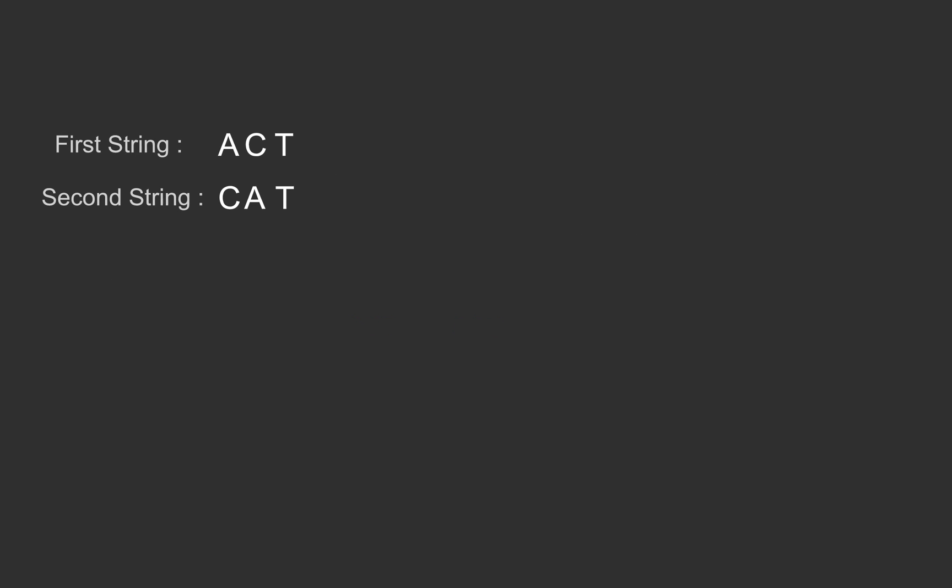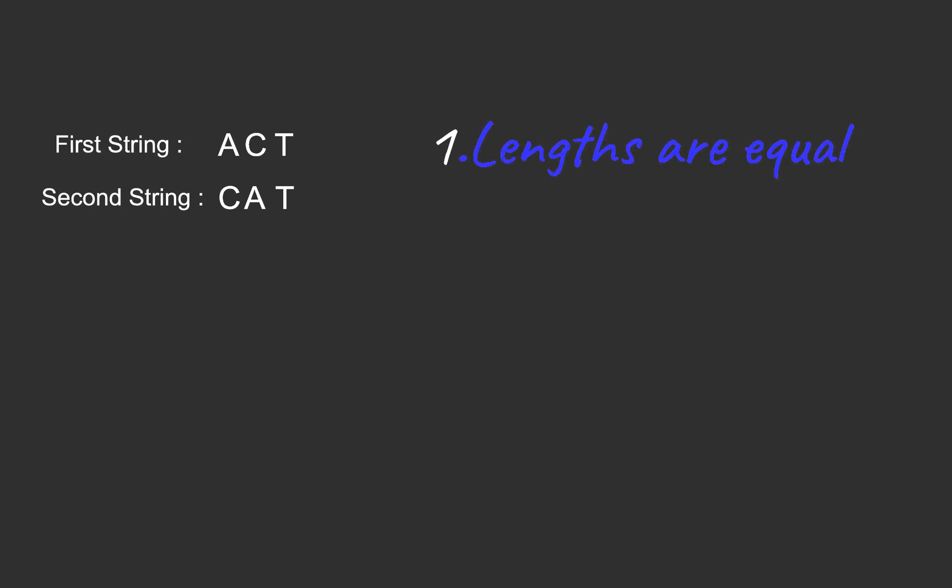Let's take a closer look at these strings. When we look at these strings to check whether they are anagrams, the first thing we should take into consideration is their lengths, as two strings with unequal lengths cannot be anagrams. In this case, the lengths are equal, so we move forward and compare the characters of both strings.